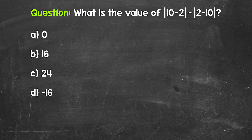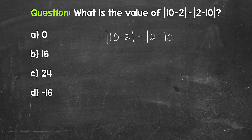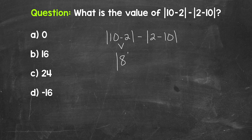Let's start by rewriting this below so we have more room. So the absolute value of 10 minus 2, minus the absolute value of 2 minus 10. Now the first thing we need to do is simplify whatever we have inside each absolute value. We'll work left to right, starting with 10 minus 2. 10 minus 2 gives us 8, and we keep the absolute value there.